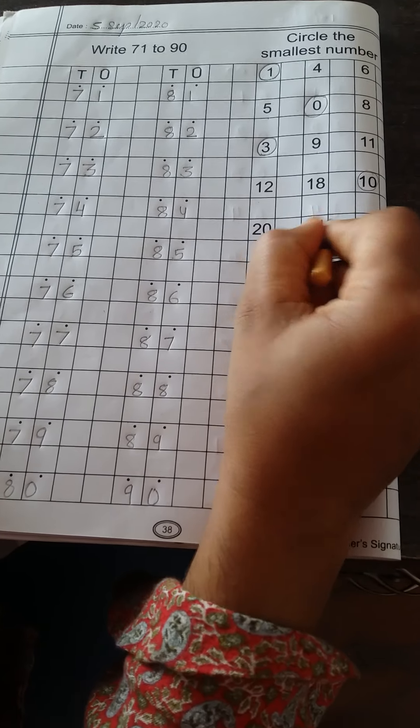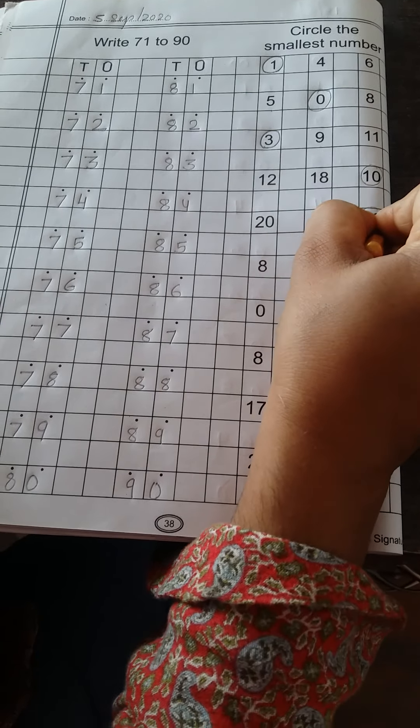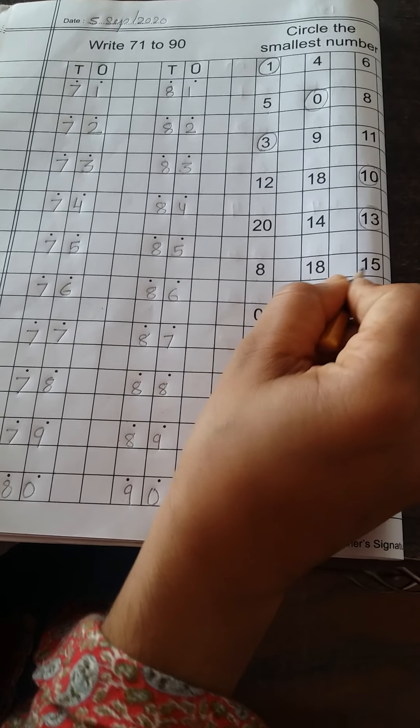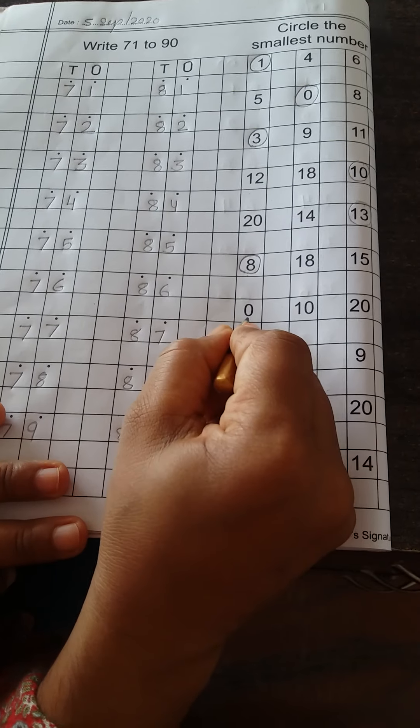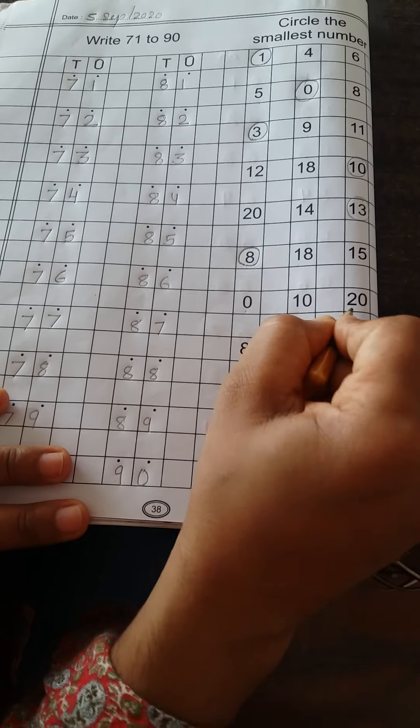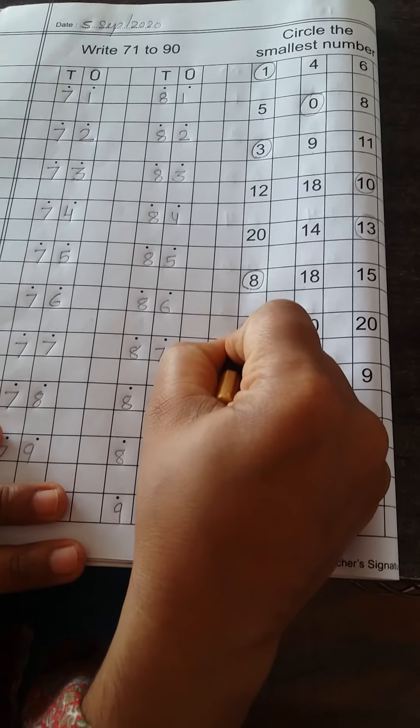Next. 20, 14, and 13. Next. 8, 18, and 15. 18 is smallest number. Next. 0, 10, and 20. 0 is smallest number.